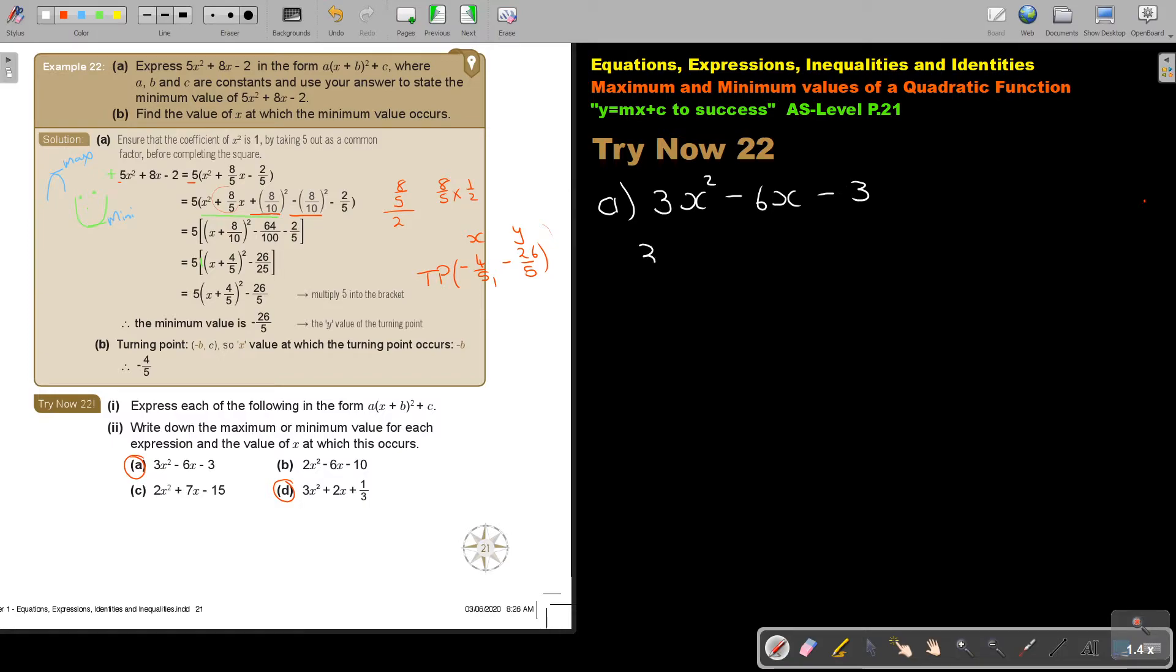So I take 3 out because I wanted 1x squared as a common factor. So it's x squared. If I divide, I get negative 2x, and if I divide, I get negative 1. And now it's going to be x squared minus 2x, and now it's negative 1. Now, I take this middle term, and I divide it by 2. So I'm going to add 1. I can make it negative 1.